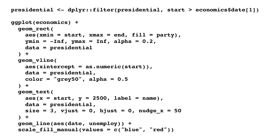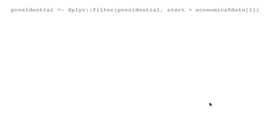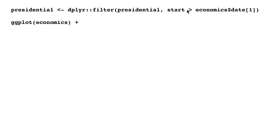The first part is filtering out for the presidents — the start date of the president should be greater than the initial date of the economics data frame. That is why it started with Nixon: because the prior president, Johnson, had a start date before the economics data frame begins, so Johnson got left out and it started with Nixon.